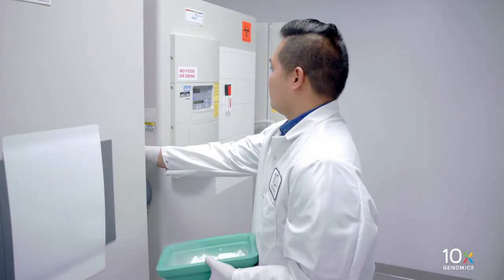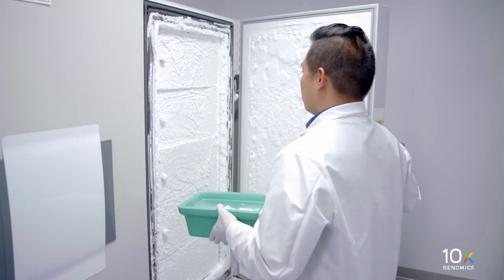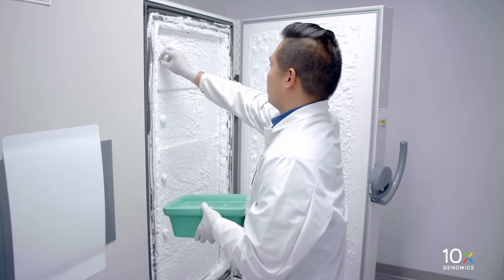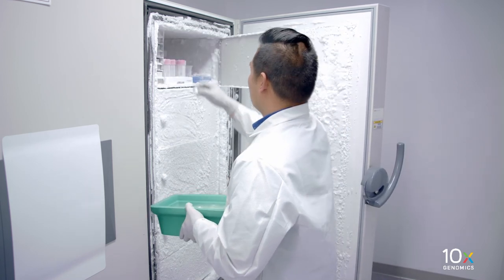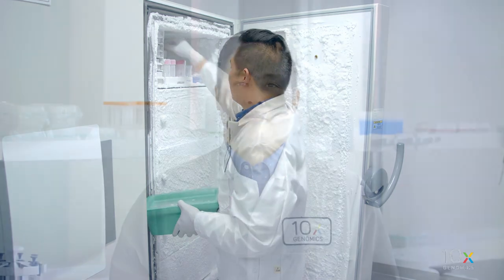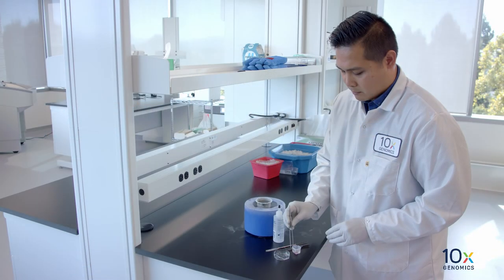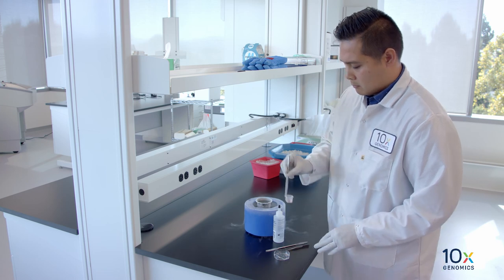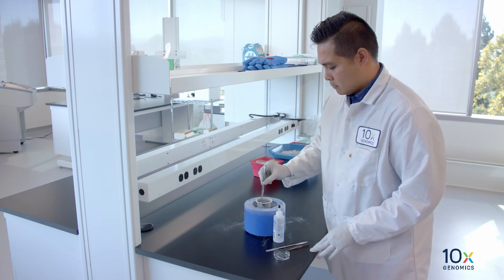Store the OCT embedded tissue block in a sealed container at minus 80 degrees Celsius for long-term storage, or immediately proceed to cryo sectioning and section placement. We have OCT embedded the frozen tissue, and next we will simultaneously freeze and OCT embed fresh tissue.